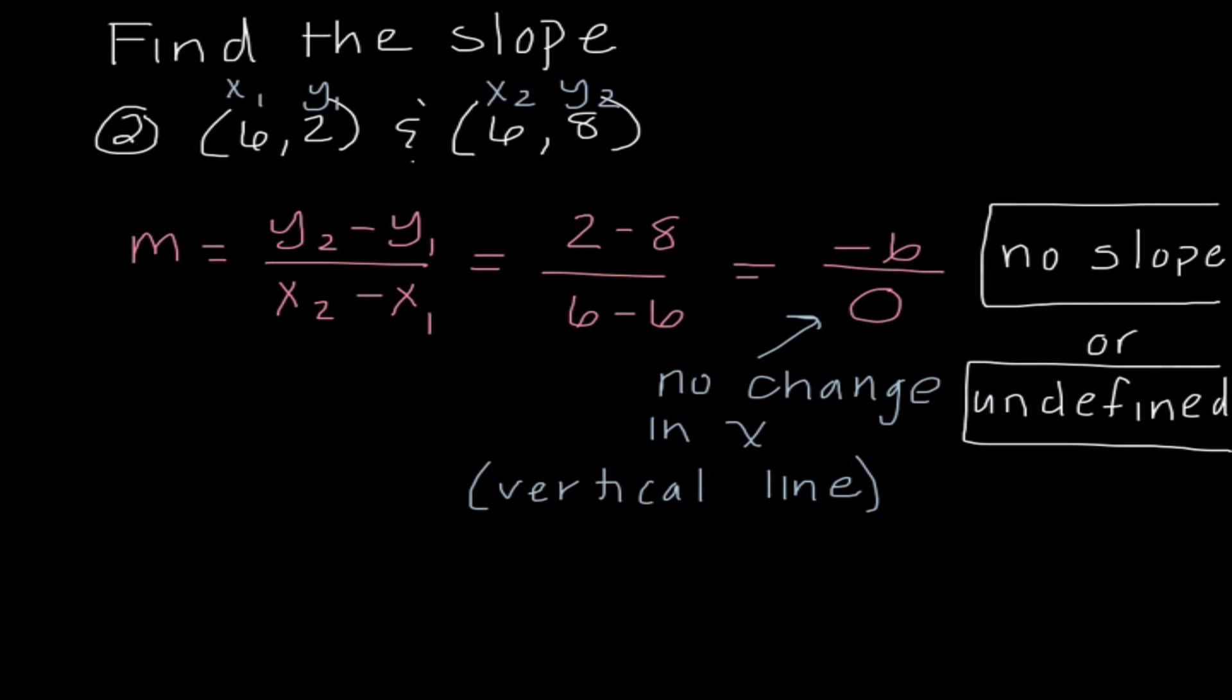The other thing I want to point out is that if we looked at our original problem, we might notice that our x values are exactly the same in the ordered pairs. If you notice that right away, then I know that this has to be a vertical line, which means no slope or undefined. And you could go ahead and write that without doing any of that work.